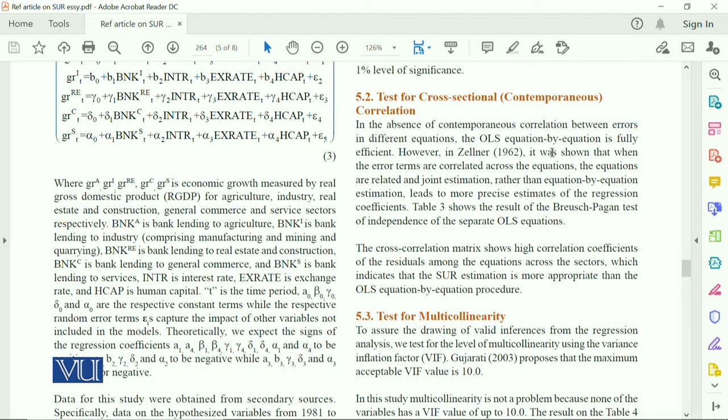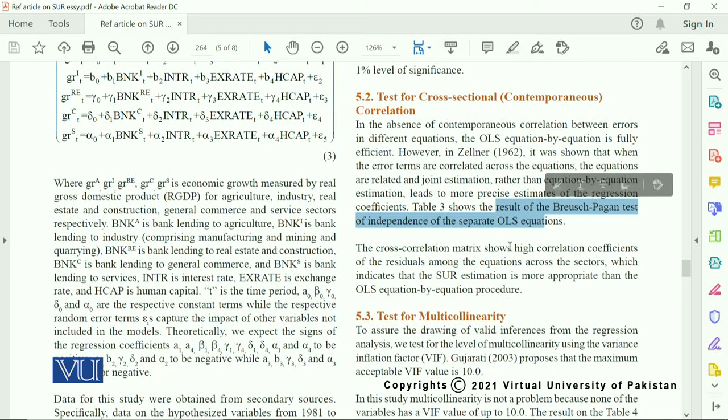However, Zellner showed that when the error terms are correlated across equations, the equations are related and joint estimation rather than equation by equation estimation. So, this is the best way it will be.